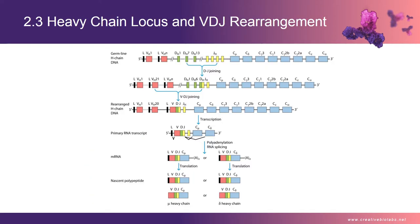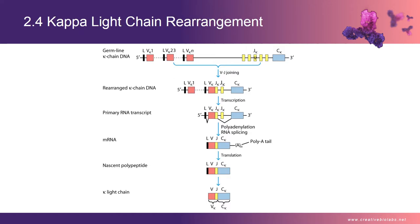Early during B-lymphocyte development, rearrangement of one of the D-gene segments to one of the J-segments takes place, regulated by the recombinase activating genes RAG1 and RAG2. Subsequently, rearrangement of one of the V-gene segments to the D-J segment occurs. The primary RNA transcript is processed by splicing the V-D-J segment to a constant region gene segment (C). Based on different constant chain mRNA, mRNA is translated to different heavy chains forming antibodies of various isotypes. Light chain gene rearrangement follows a similar principle: there are no D-genes in light chains, kappa chain is rearranged first, and if rearrangement of both kappa alleles is unsuccessful, lambda chain is rearranged.